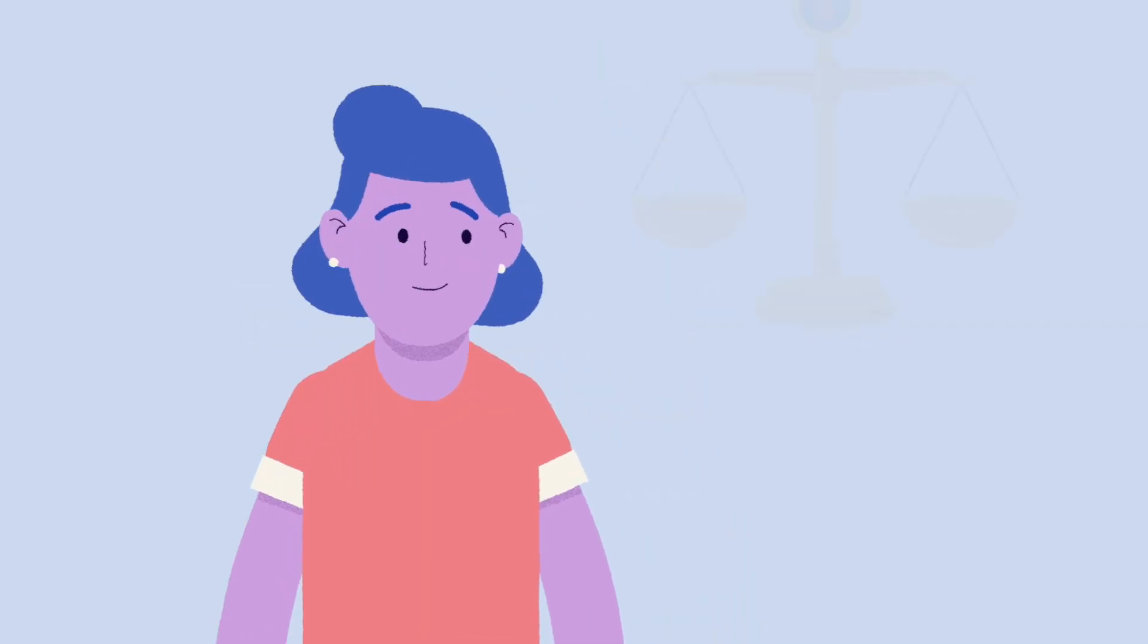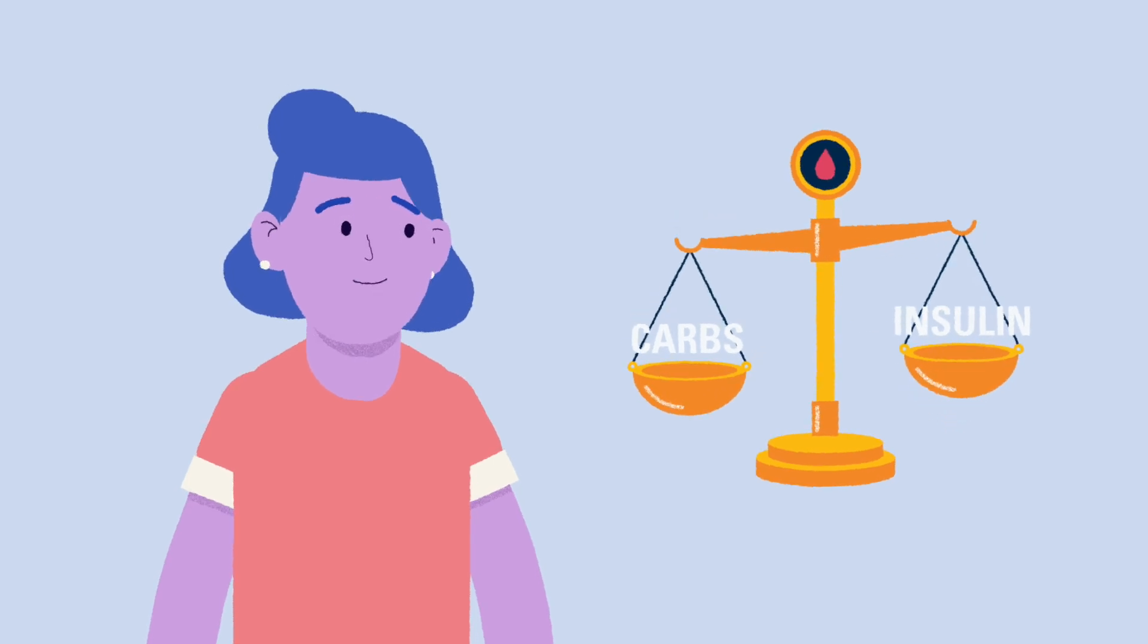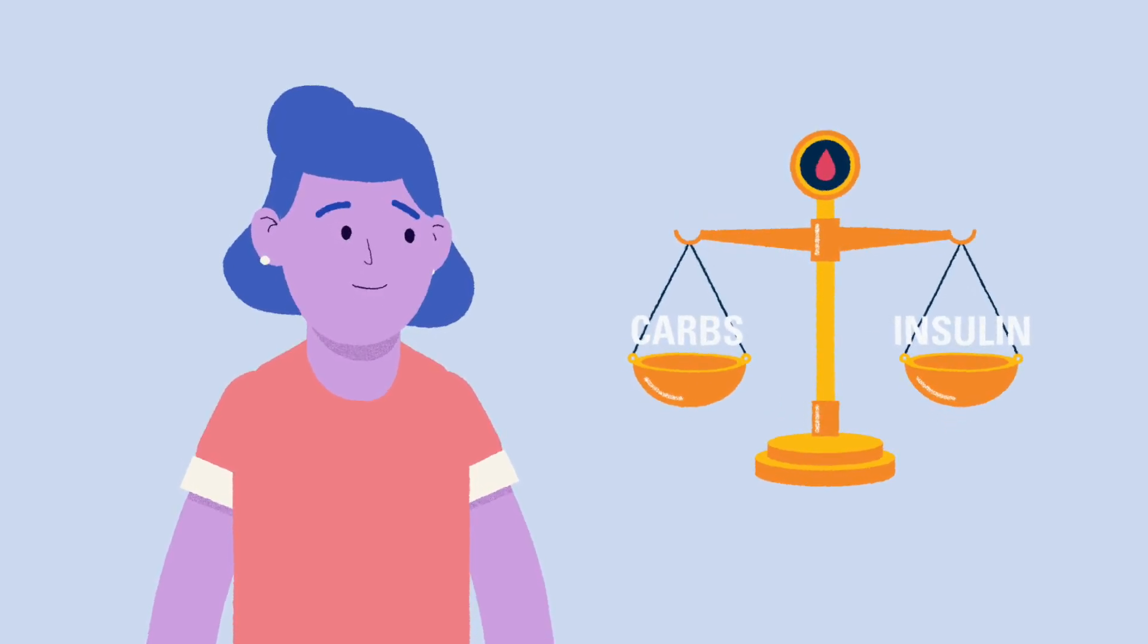The goal for every person with diabetes is to match their insulin doses and their carbs eaten to achieve balanced blood glucose levels. But how do we know what a good balance is?